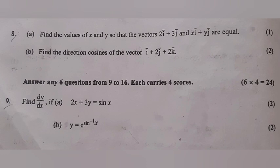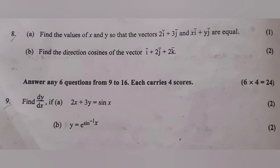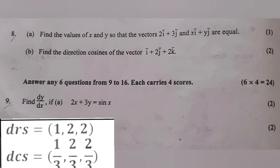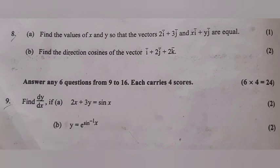Question 8A: Find the values of x and y so that the vectors 2i + 3j and xi + yj are equal. Answer: x = 2, y = 3. Question 8B: Find the direction cosines of the vector i + 2j + 2k. Direction ratios are (1, 2, 2). The magnitude is 3, so direction cosines are (1/3, 2/3, 2/3).